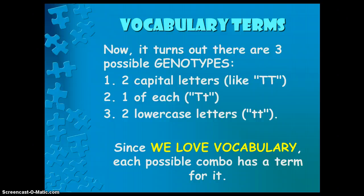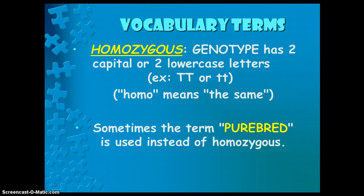It turns out that there are three possible genotypes. You can have two capital letters, like big T, big T; one of each, big T, little T; or you can have two lowercase letters, little T, little T. When we talk about a homozygous genotype, that has two capital or two lowercase letters — big T, big T or little T, little T — it has the exact same genes. It's homozygous, with 'homo' meaning the same.